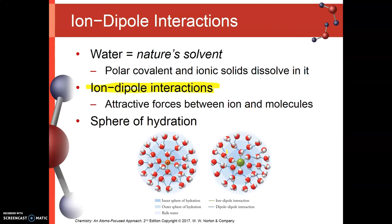Ion-dipole interactions are a step above — kind of in between polarity and ionic compounds, so really strong interactions. If we look closely, the way that water molecules orient to the ions is different on each side. For the cation, the positive ion attracts the negative poles of each water molecule. Whereas the anion attracts the hydrogens — the positive side of each pole — and pushes away the negative side. These kinds of interactions are common especially when thinking about ionic compounds, or salts, being dissolved in water.